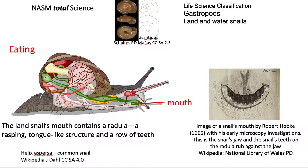For eating, there's a mouth up at the front — a head end — which contains a radula, a rasping tongue-like structure, a row of teeth. On the right you've got a drawing done by Robert Hooke, who did a lot of early work with microscopes and cork cells in the 17th century, showing the snail's jaw.